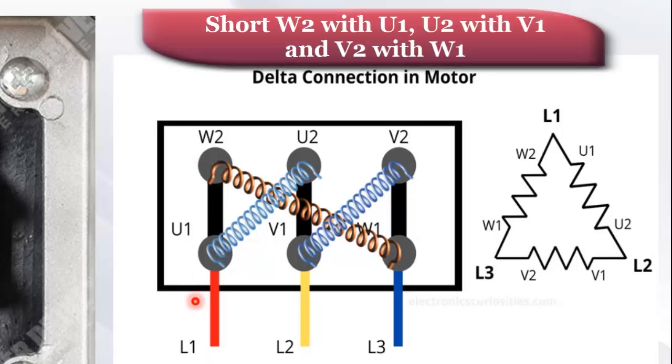Now make straight connections to connect W2 with U1, U2 with V1, V2 with W1, in order to run motor in delta configuration.